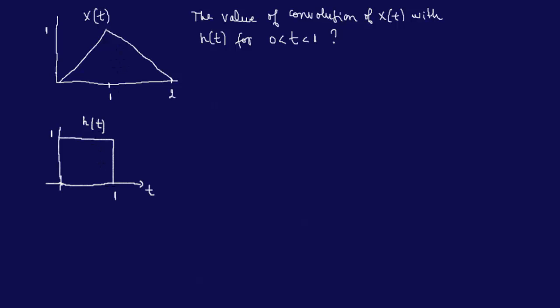We are going to flip H of T and maintain X of T. First, we change the T's to taus — that's the first step, so we know we're dealing with taus instead of T's and don't mix things up. Then we multiply the function by minus tau, just like in the previous video, which flips it to the other side, and then we add T, which is a shift by T.